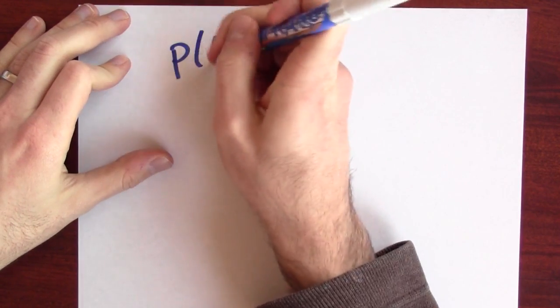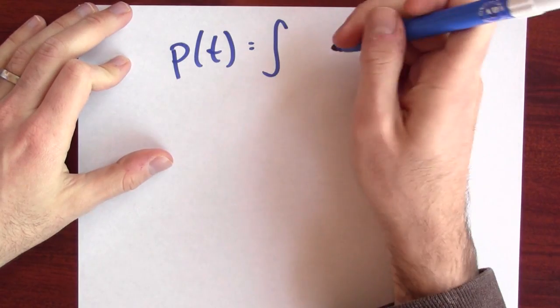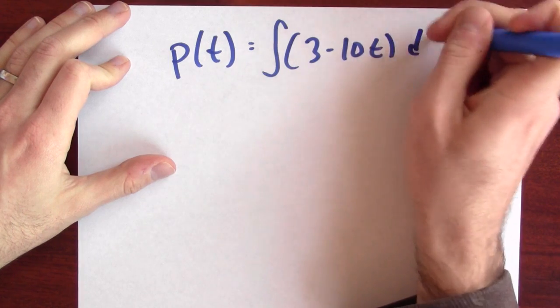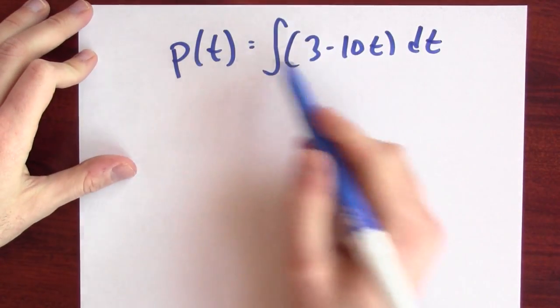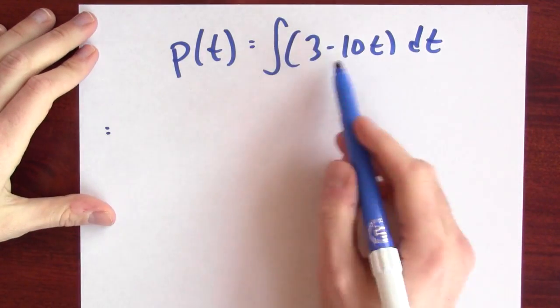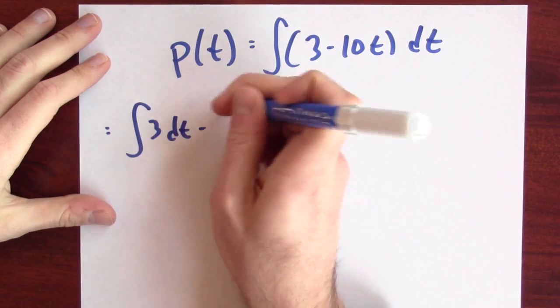Now I want to use the fact that my velocity at time t is 3 minus 10t. That means in our specific case, my position, being the antiderivative of velocity, is the antiderivative of 3 minus 10t. We can solve that anti-differentiation problem. This is the antiderivative of a difference, which is the difference of antiderivatives.